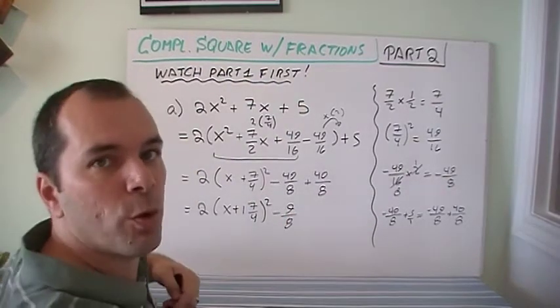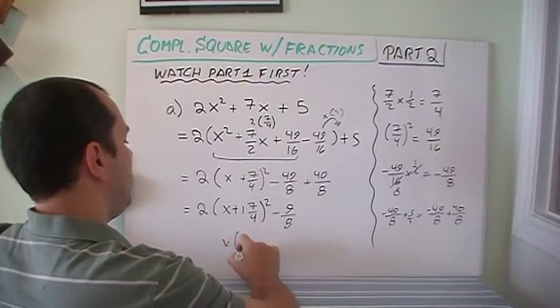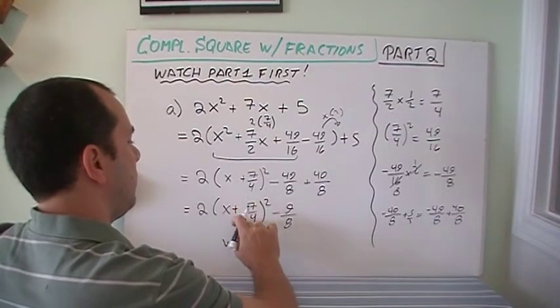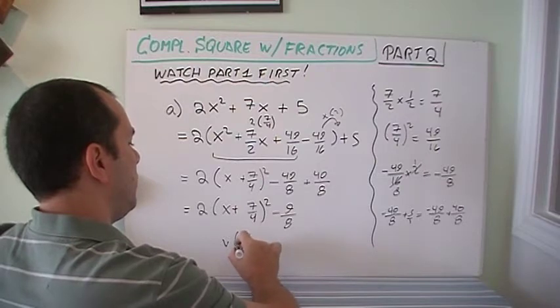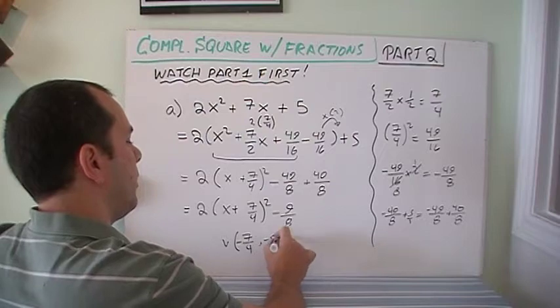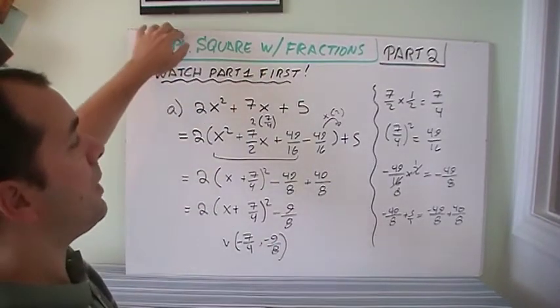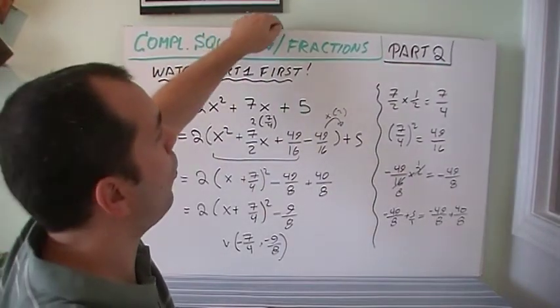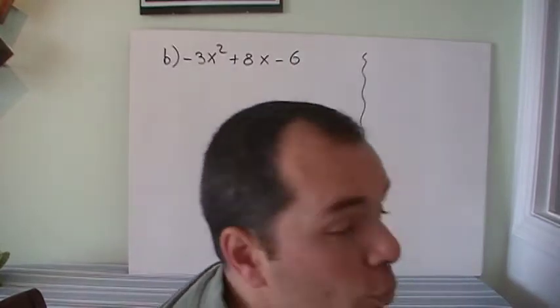And of course, since we always go that extra step to say what the vertex is, we just state that the vertex is the opposite of this, negative 7 quarters and negative 9 over 8. Okay? And that was actually the example that appeared under part 1. So let's check another. We're going to do two more examples.